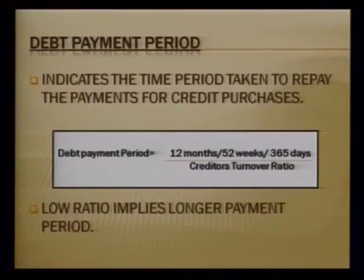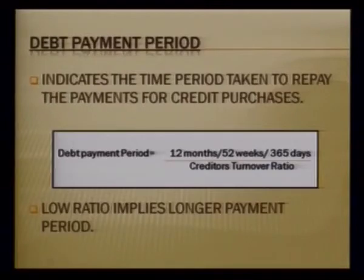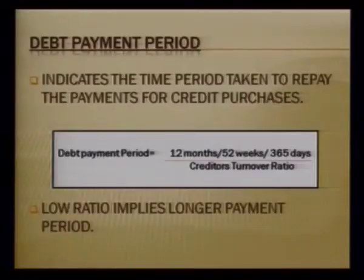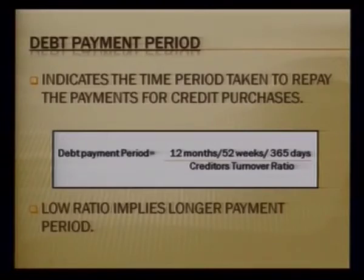Similar to the debt collection period, here we compute the debt payment period — how long the business takes to pay off its credit purchase debts. A lower creditors turnover ratio implies a longer payment period, meaning the business takes more advantage of credit purchases. The formula is 12 months, 52 weeks, or 365 days divided by the creditors turnover ratio.